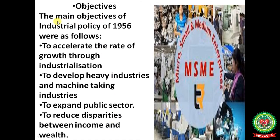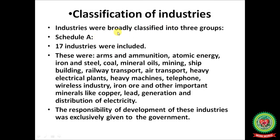Objectives of the Industrial Policy 1956: to accelerate the rate of growth through industrialization; to develop heavy industries and machine-making industries; and to expand the public sector to reduce disparities in income and wealth. Industries were classified into three groups. Schedule A (17 industries) — exclusively reserved for the government — included arms and ammunition, atomic energy, iron and steel, coal, mineral oils, mining, shipbuilding, railway transport, air transport, heavy electrical plants, heavy machines, telephone, wireless, iron ore, other important minerals like copper and lead, and generation and distribution of electricity.